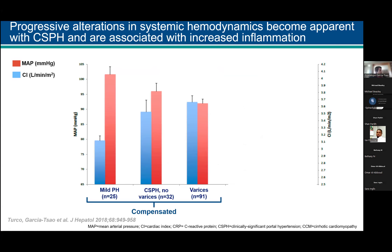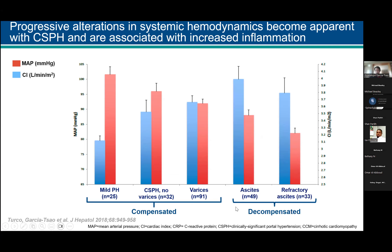In a study we did in Italy where all patients had HVPG measured along with hemodynamic MAP and cardiac index, we could for the first time stage them based on current knowledge. Those with mild portal hypertension had a normal cardiac index and a normal MAP. But even when they developed clinically significant portal hypertension, there was already an increase in cardiac index and a decrease in MAP, even more so in patients with varices. In the decompensated patients, there was the maximum increase in cardiac index and decrease in MAP — the hyperdynamic circulatory state.